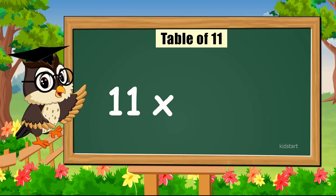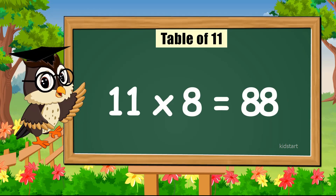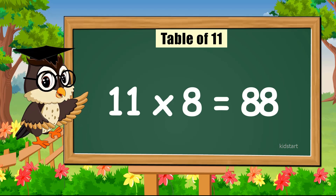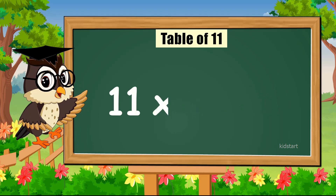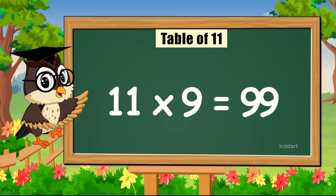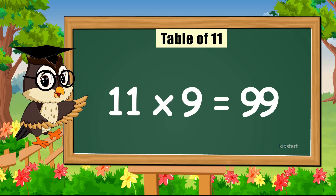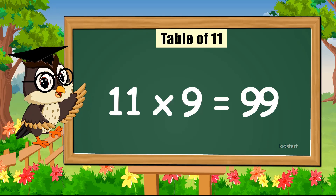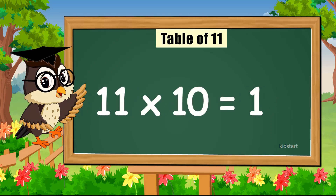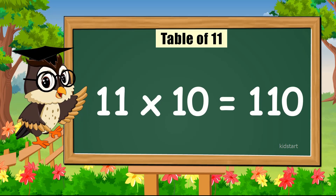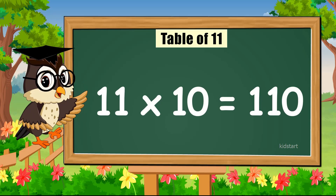Eleven times seven is seventy-seven. Eleven times eight is eighty-eight. Eleven times nine is ninety-nine. Eleven times ten is one hundred and ten.